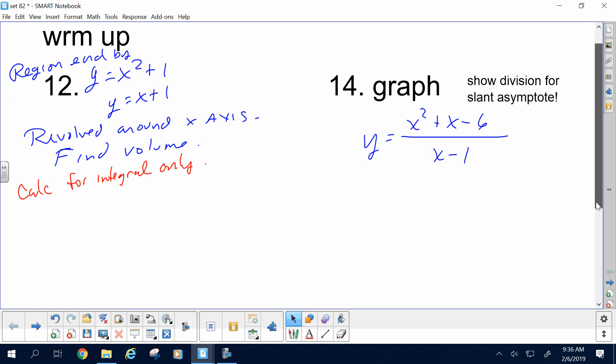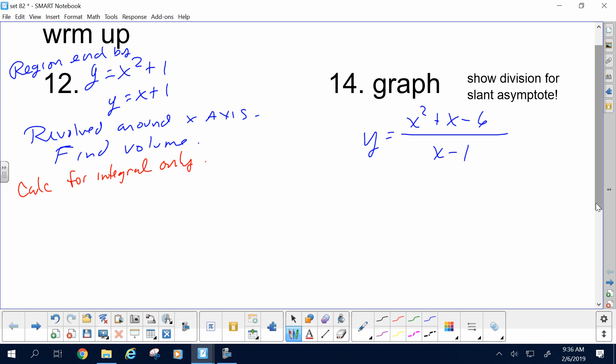So, y equals x squared plus 1, what does the graph look like? Parabola shifted up 1. What about y equals x plus 1? Line with slope of 1 and y-intercept of 1. So it looks like that.